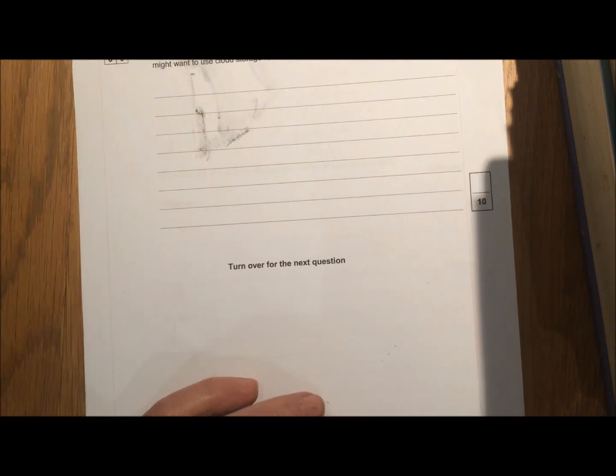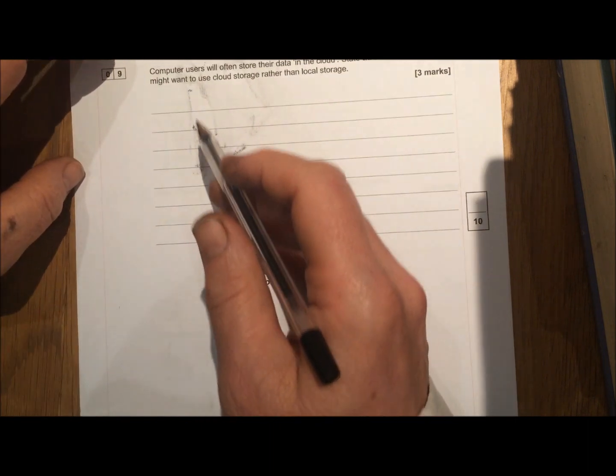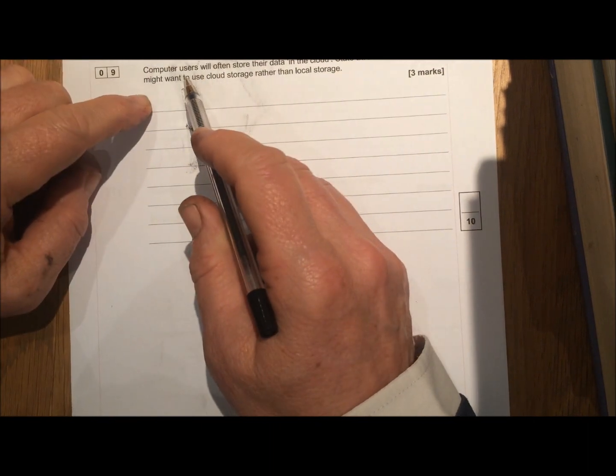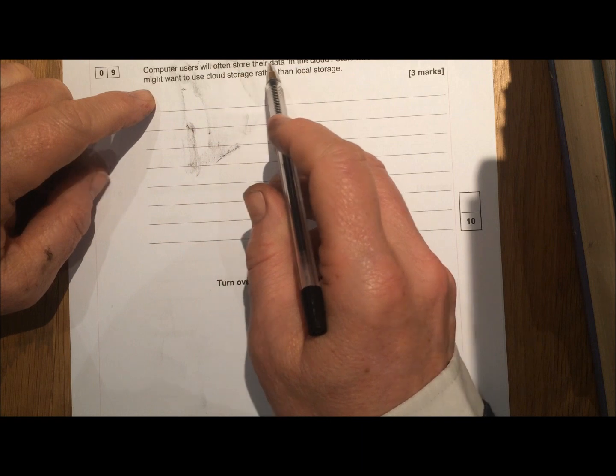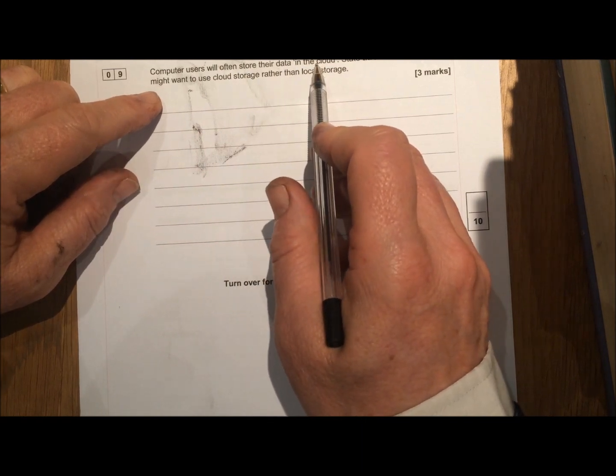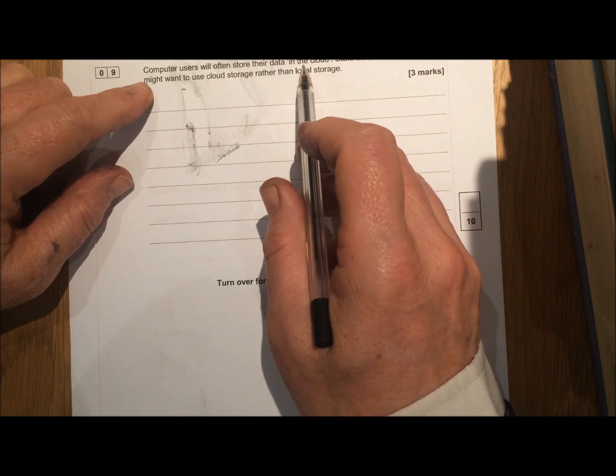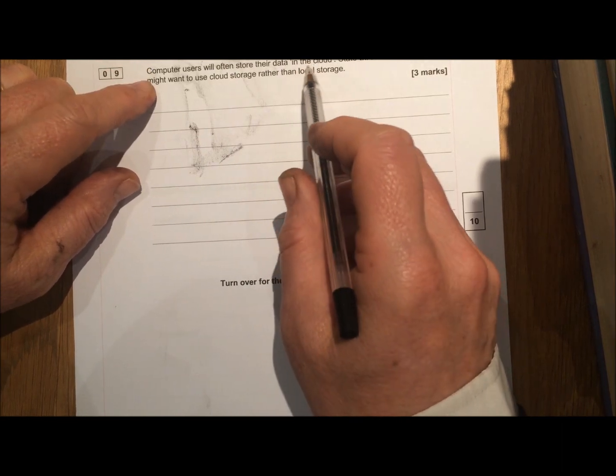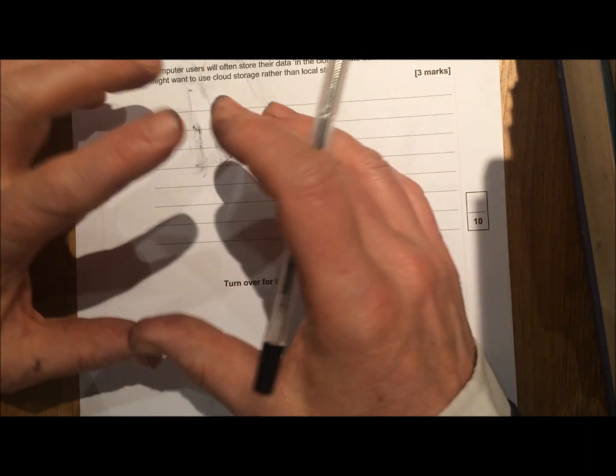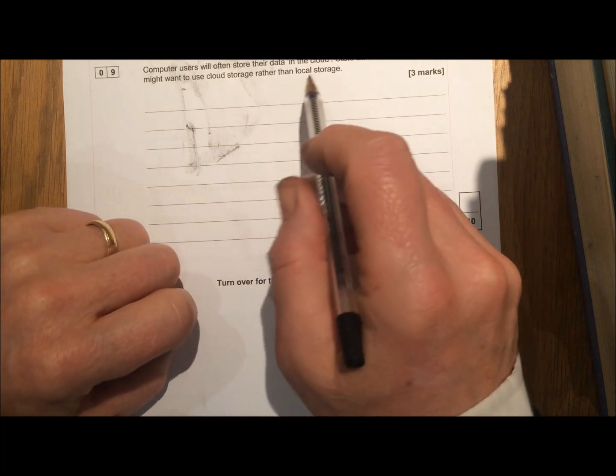Right. Question nine. Sorry about the state of this one. I had a bit of a printer meltdown earlier. Computer users will often store their data in the cloud. Cloud computing is where data is stored online, so like iCloud or Google Drive, something like that, where instead of storing it locally on your computer, you store it out there on the Internet.